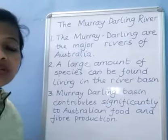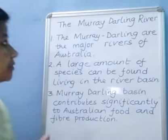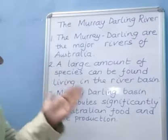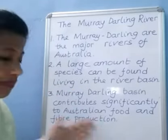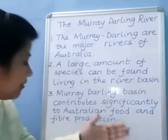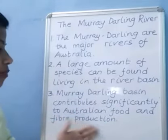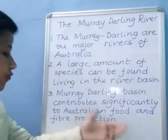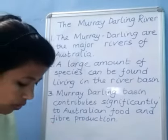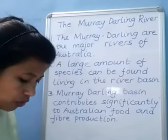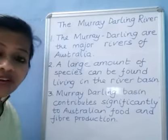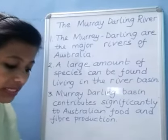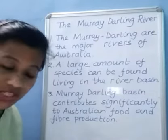The Murray Darling Rivers — these two rivers flow in Australia. The Murray Darling are the major rivers of Australia. A large amount of species can be found living in the river basin. The Murray Darling Basin contributes significantly to Australian food and fiber production because the region is fertile. Murray Darling begin far inland and flow to the Southern Ocean. The Murray Darling drainage area is one of the largest in the world and certainly the largest on the continent.